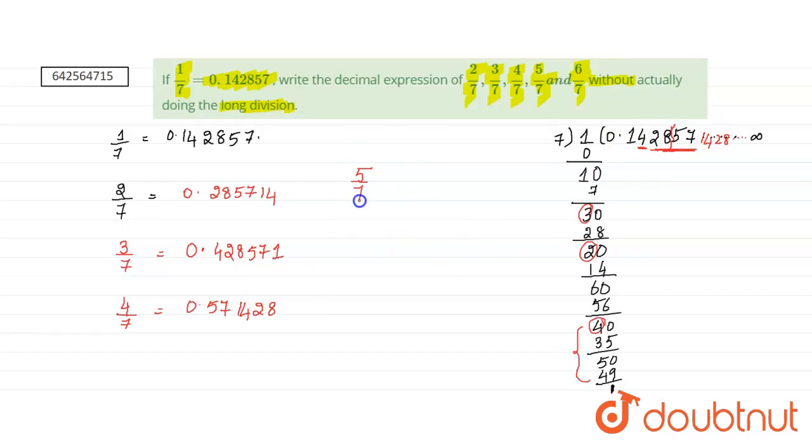Then, if we take 5 by 7, where is 5, here is 5. So, from this point onwards, everything is repeating again. So, we can write it as 0 point, 7, 1, 4, 2, 8, 5.